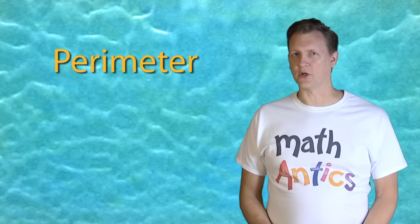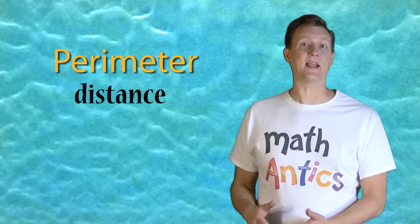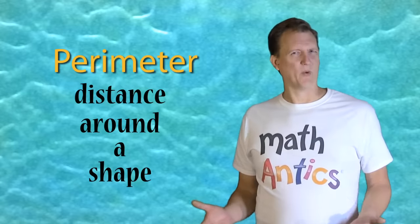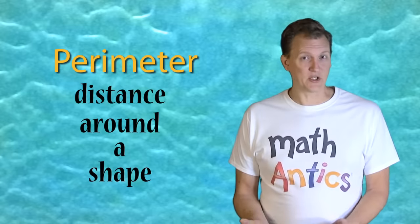Perimeter is just a fancy math term that means the distance around a shape. But what exactly does the distance around a shape mean?